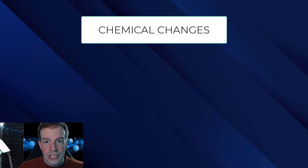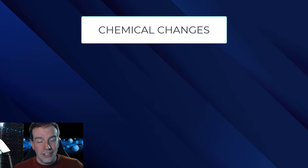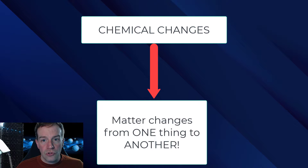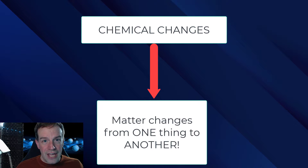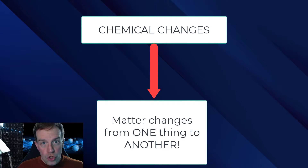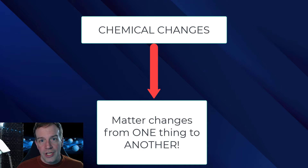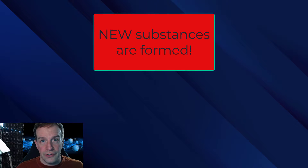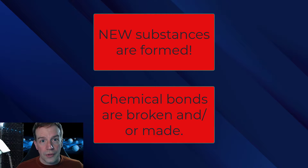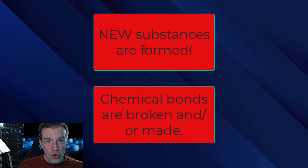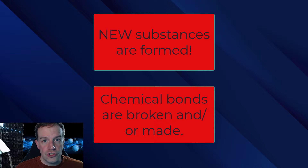Chemical changes are also called chemical reactions. In a chemical reaction, matter changes from one thing into something new. The atoms are rearranged and a new substance is formed. Chemical bonds are either broken or made, and the atoms get rearranged.